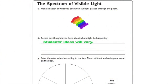Invite students to continue experimenting with the positions of the prism and the paper and to record their observations on Activity Sheet 1.